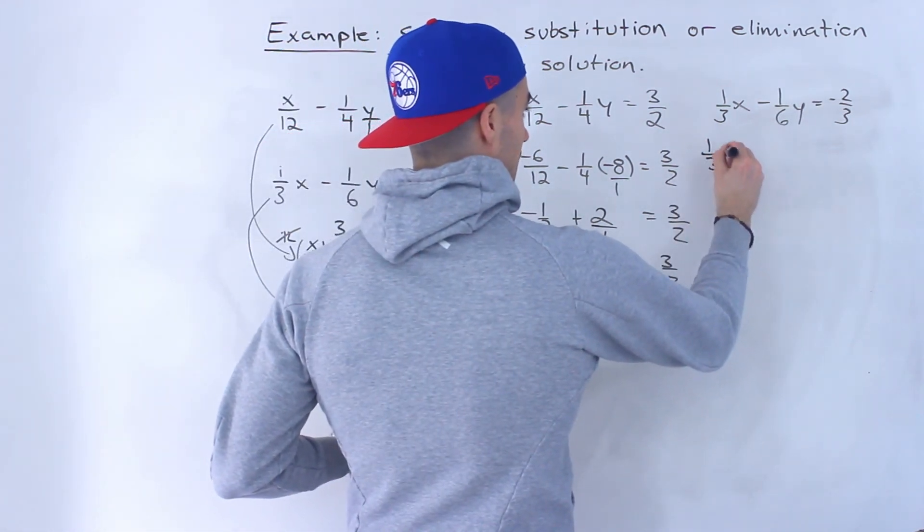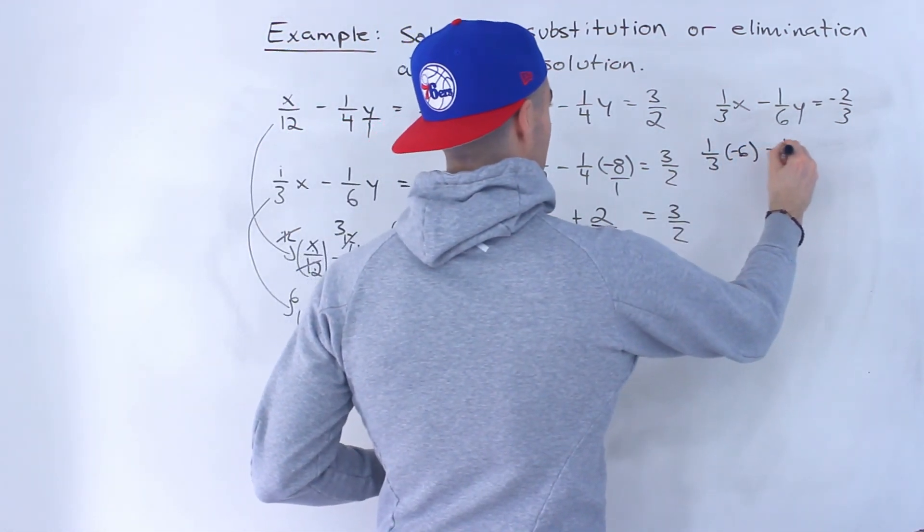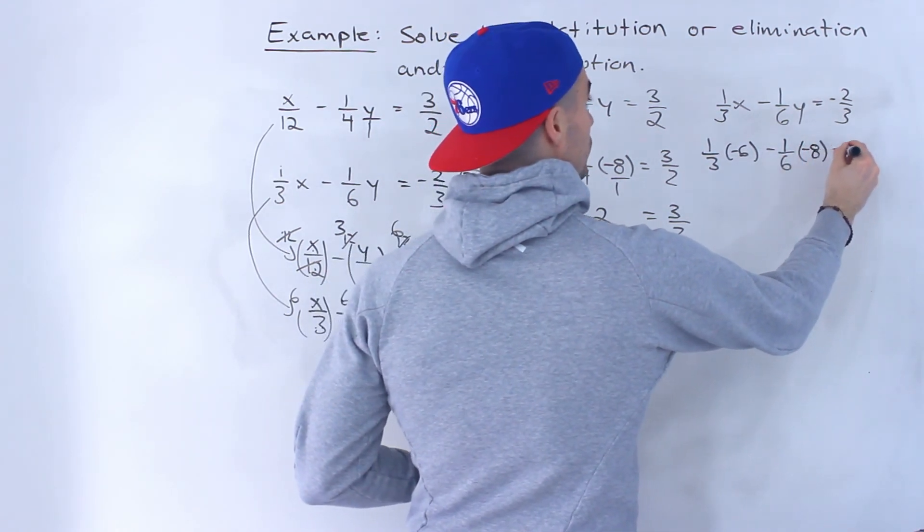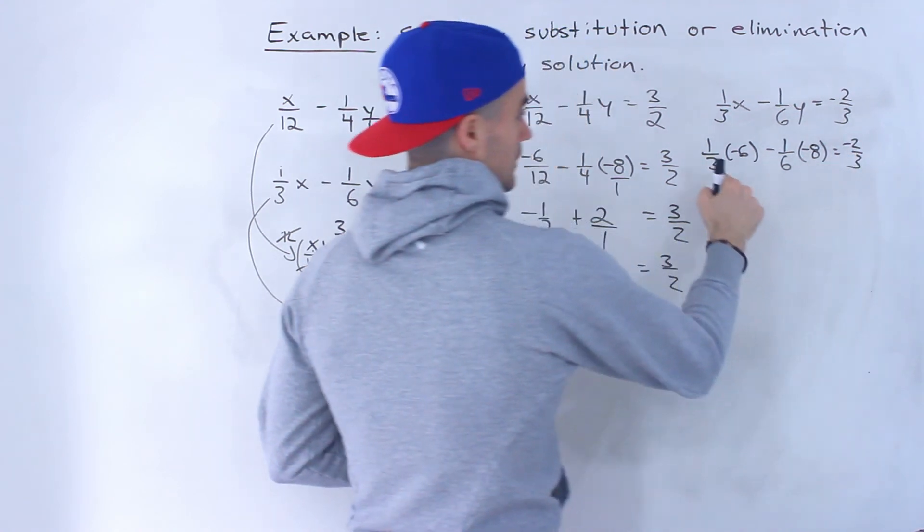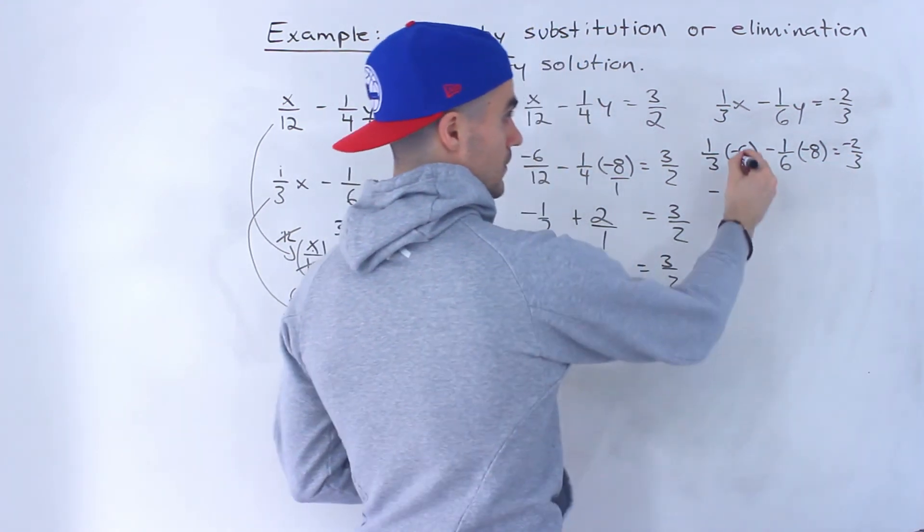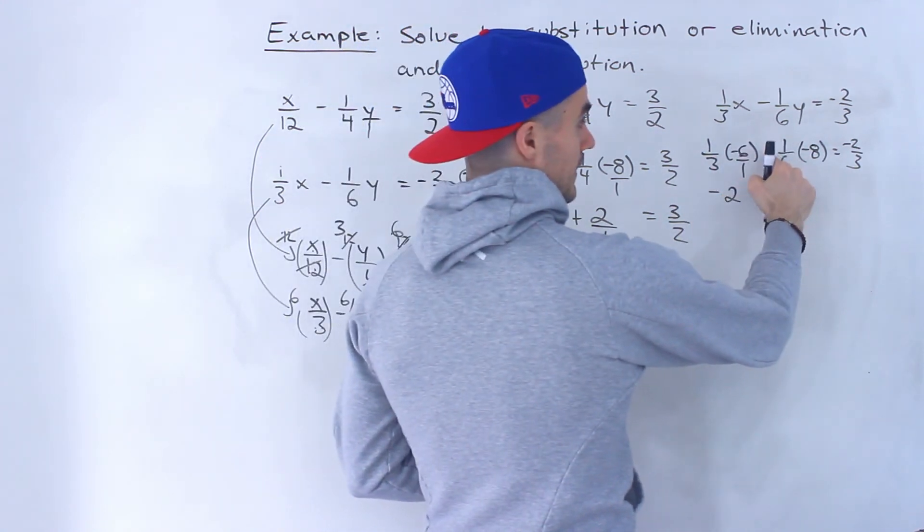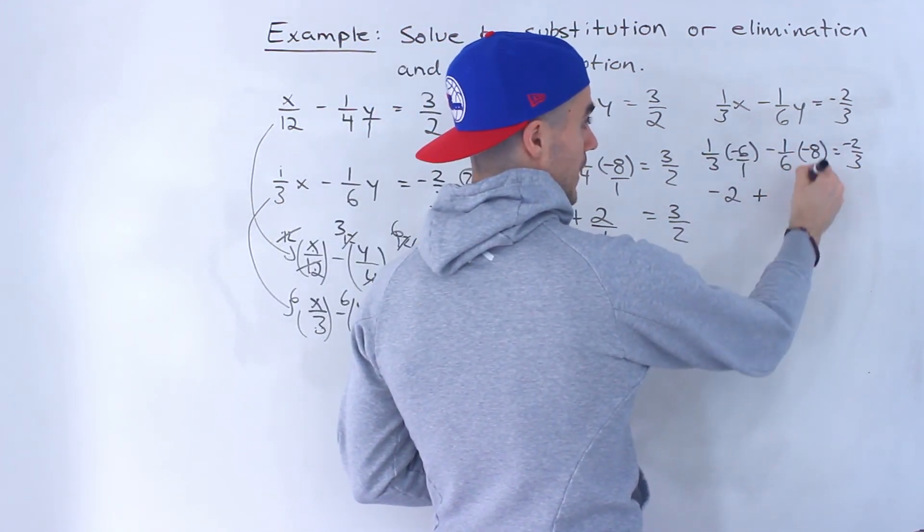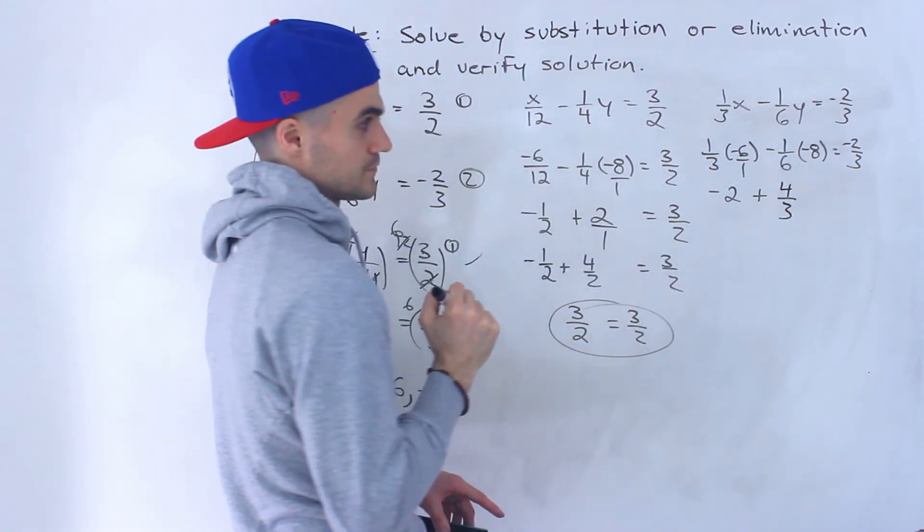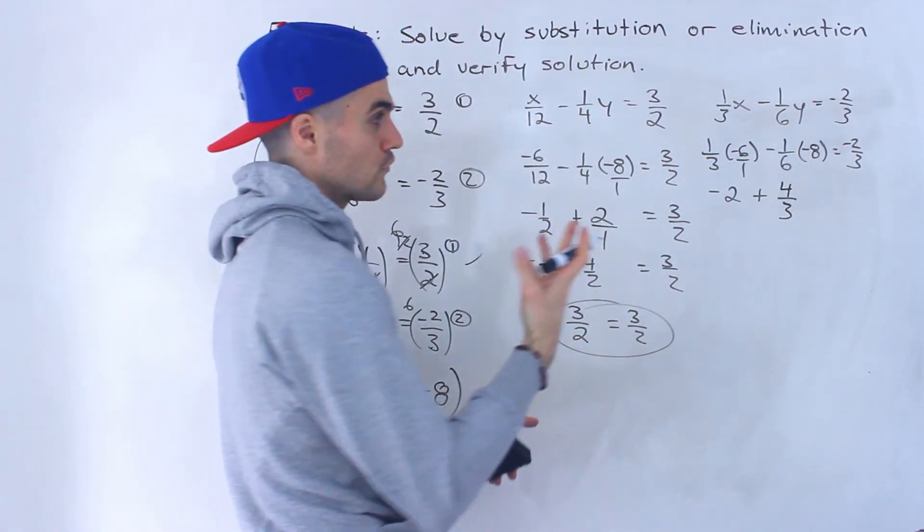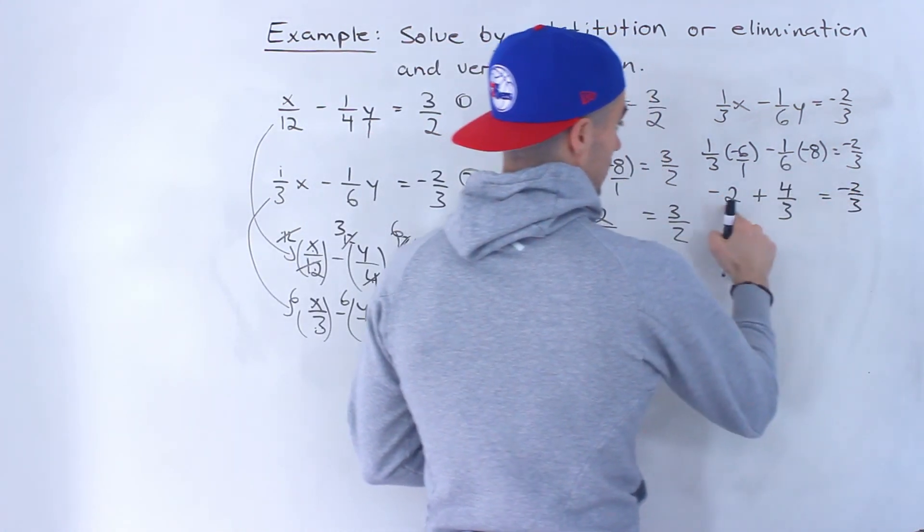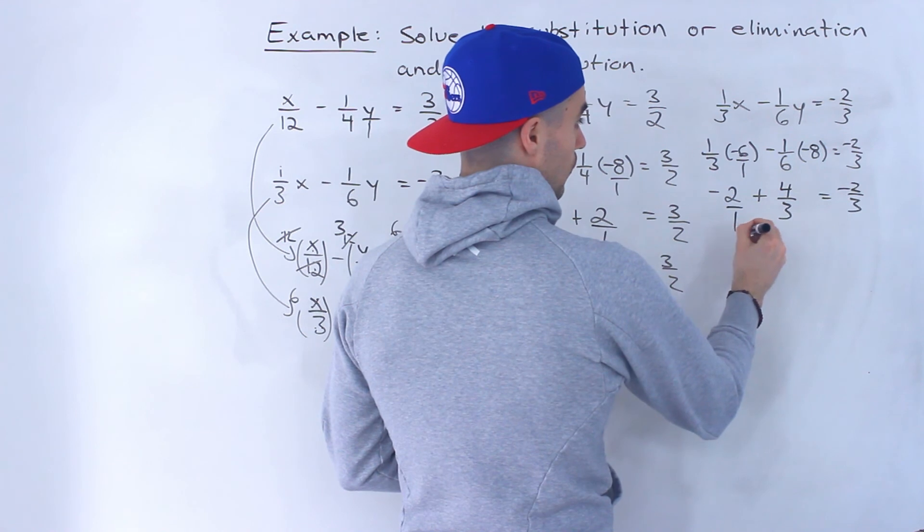And then the second line... Let's see if it works out. Hopefully it does. 1 over 3 times negative 6 gives us negative 2. Right? Negative 6 over 3 gives us negative 2. And then negative negative is positive. Now 8 over 6, that would be 4 over 3. That would simplify to 4 over 3. Then we've got negative 2 over 3. And this negative 2 is like over 1.